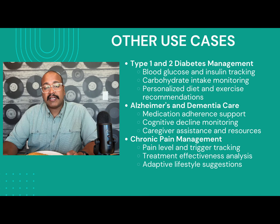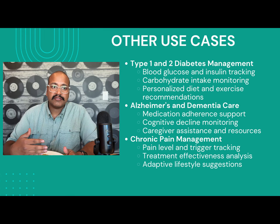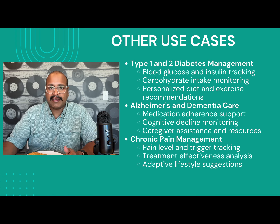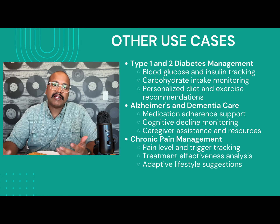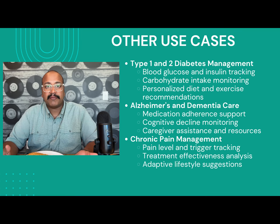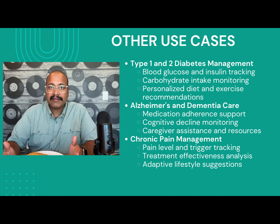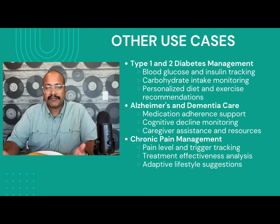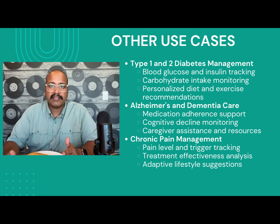Let's talk about the other use cases for Maxwell. Maxwell can be used to manage a plethora of different ailments — things like type 1 and type 2 diabetes, and people with dementia. You can update and modify the parameters you're tracking. This makes life easier for both the caregiver and the person suffering from the ailment — they only have to concentrate on logging their status and don't have to worry about generating insights.